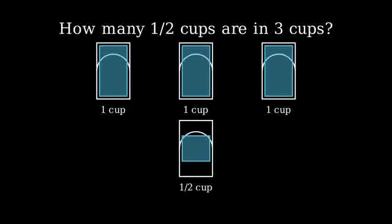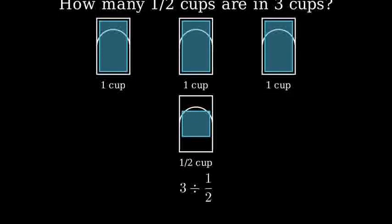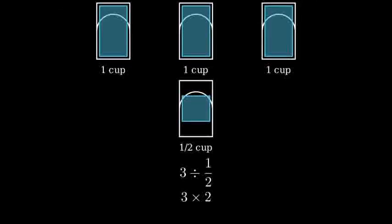To find how many half cups are in three cups, we need to divide three by one half. We can write this as three divided by one half. When dividing by a fraction, we can multiply by its reciprocal. So this is the same as three times two.